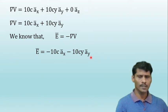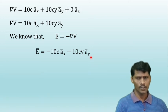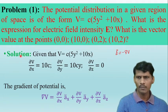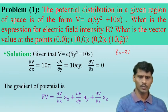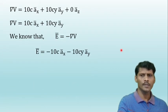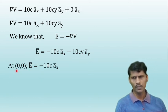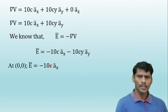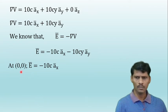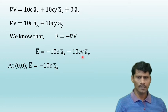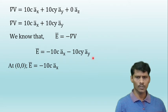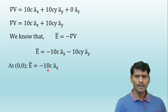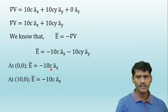Now calculate the vector value at different coordinate points. At point (0,0,0), x = 0 and y = 0. The first term has no x dependence, and substituting y = 0 into the second term gives 10c·(0) = 0. Therefore, at (0,0,0), the electric field intensity vector is −10c·ax.